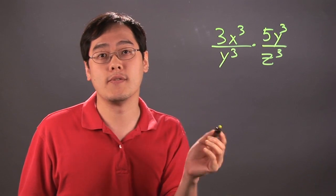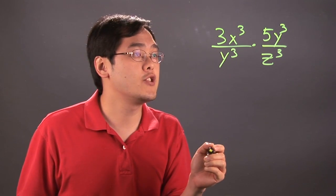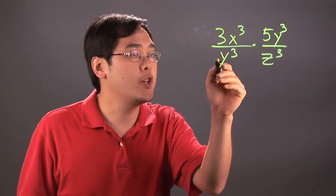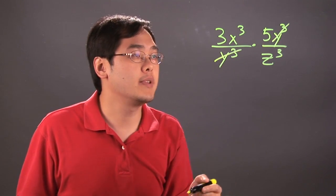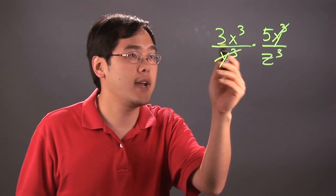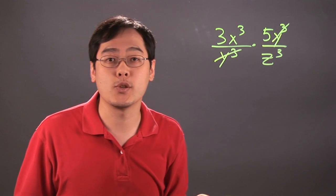One approach is you can see if you can reduce right away. And as you can see, the y cubes actually cancel completely, but that's about it because the 3 and the 5 are on the same side and the x does not cancel with the z.